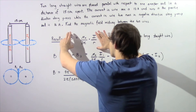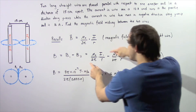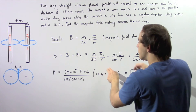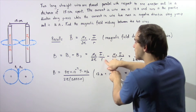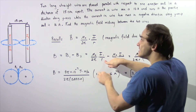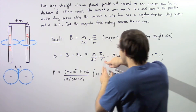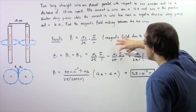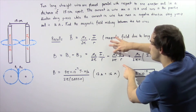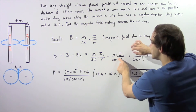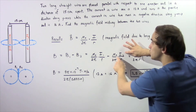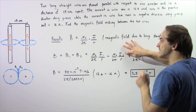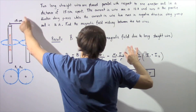From our equation, B1 = (μ₀ / 2π) × (I1 / R), where R is 7.5 centimeters — half the separation — and I1 is 12 amps. Similarly, B2 = (μ₀ / 2π) × (I2 / R), where I2 is 16 amps and R is the same value.